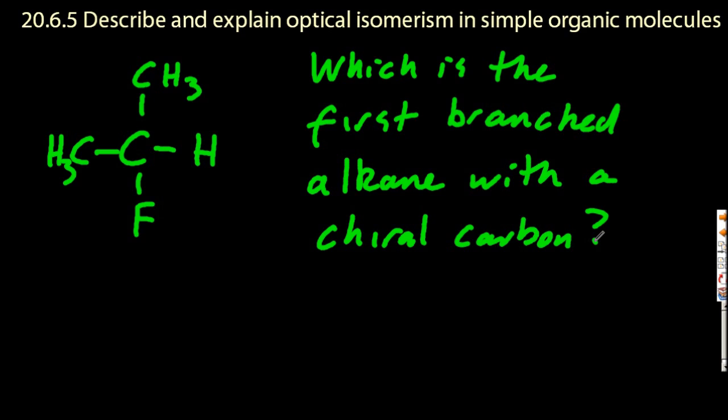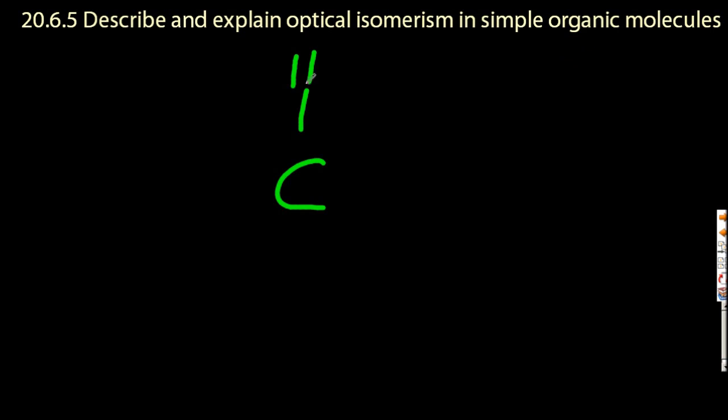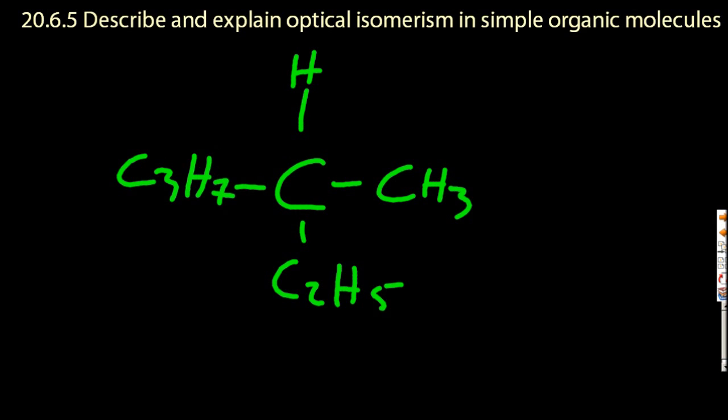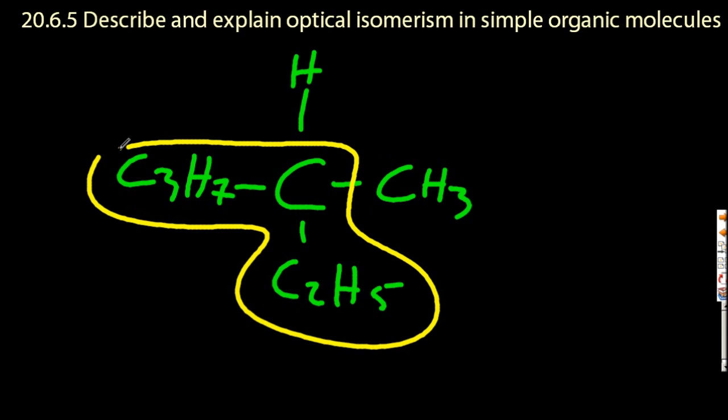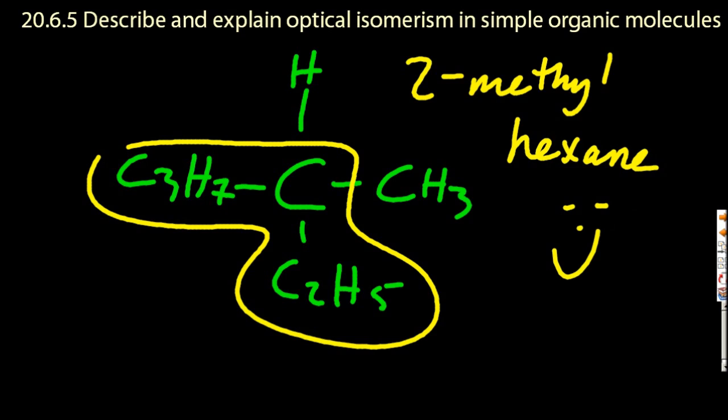I'll give you the solution in a second. All right, then. So hydrogen, a methyl, an ethyl, and a propyl. That's as simple as I can put on that carbon and get them all different. So the answer is 2-methylhexane. 2-methylhexane.